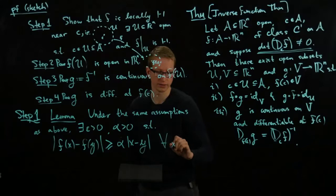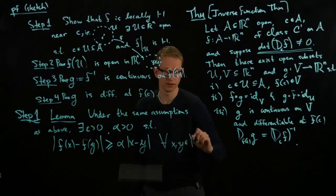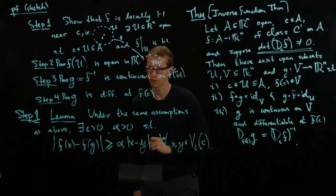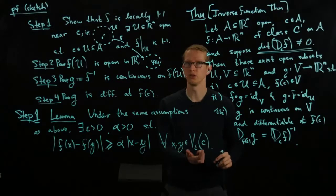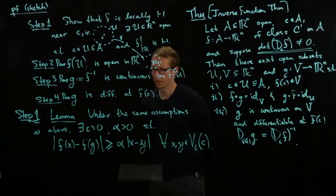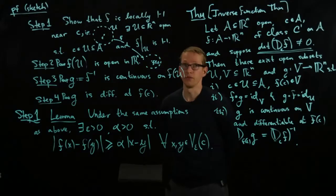for all x and y in the epsilon neighborhood around c. And we'll see that our open set u is very closely related to this one. Now, this is the claim. It's already highly non-trivial and instead of proving it now we'll just indicate why this lemma implies that the function